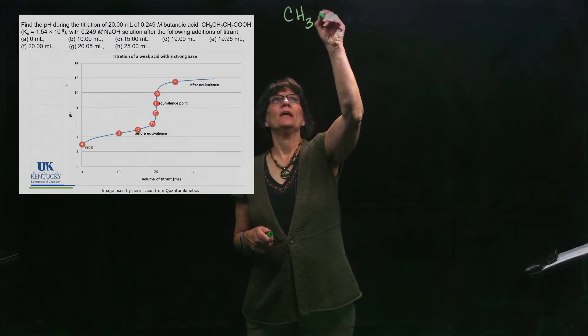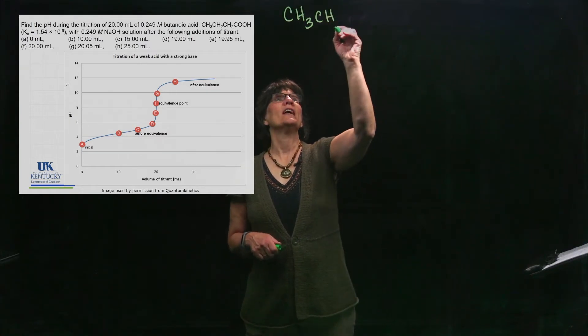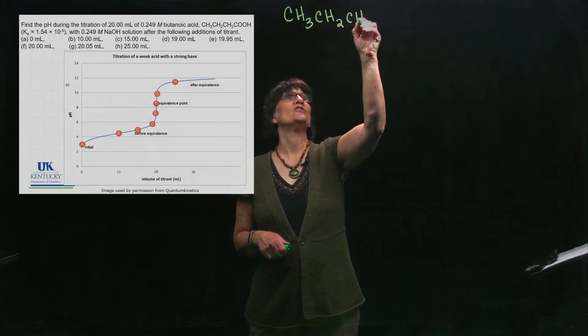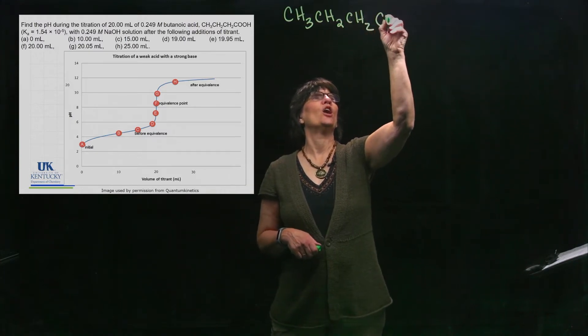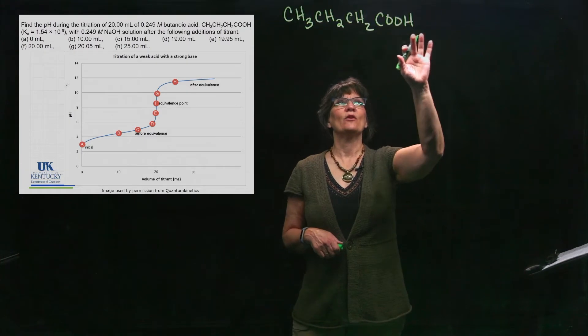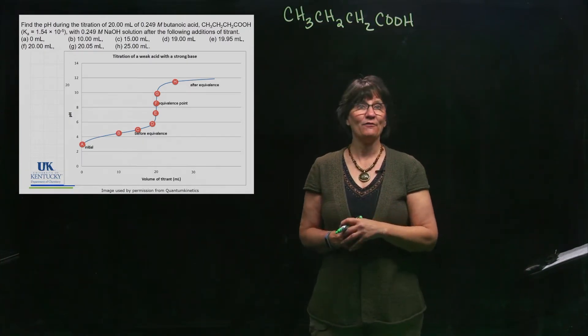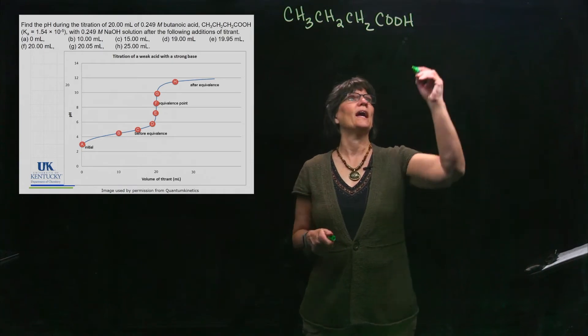The acid has how many carbons? Four. CH3, CH2, CH2 and then the COOH which is the organic acid group that gives it away that it's an acid, plus it gives me a Ka value for it that lets me know it's a weak acid.